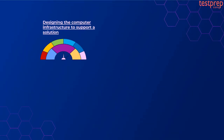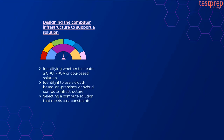Number four, designing the computer infrastructure to support a solution. It contains three subtopics: first, identifying whether to create a GPU, FPGA, or CPU-based solution; second, identifying if to use a cloud-based, on-premises, or hybrid compute infrastructure; third, selecting a compute solution that meets cost constraints.